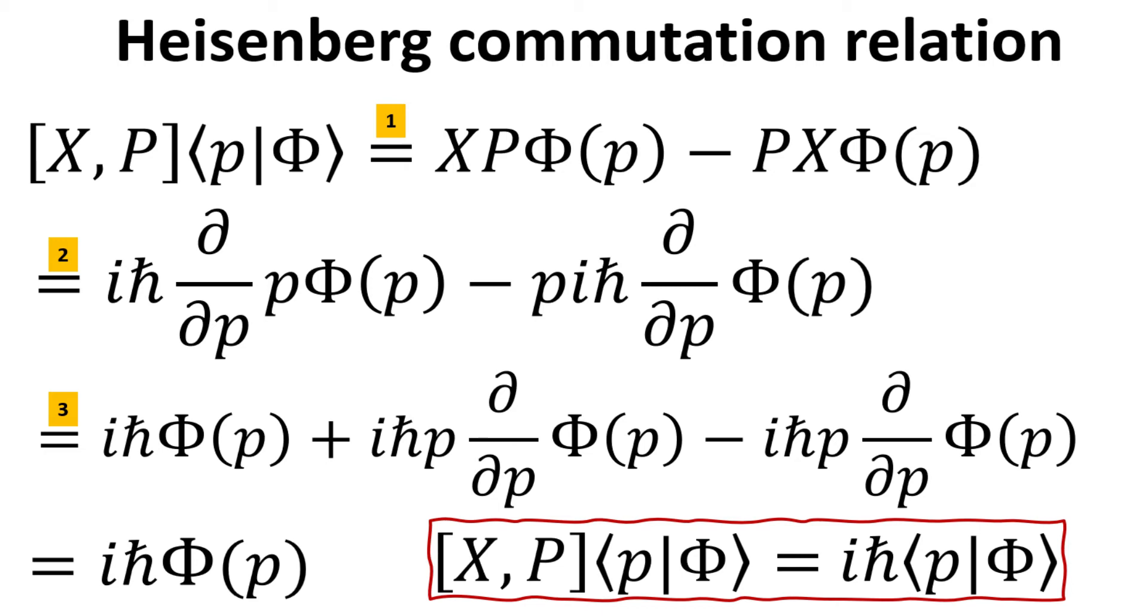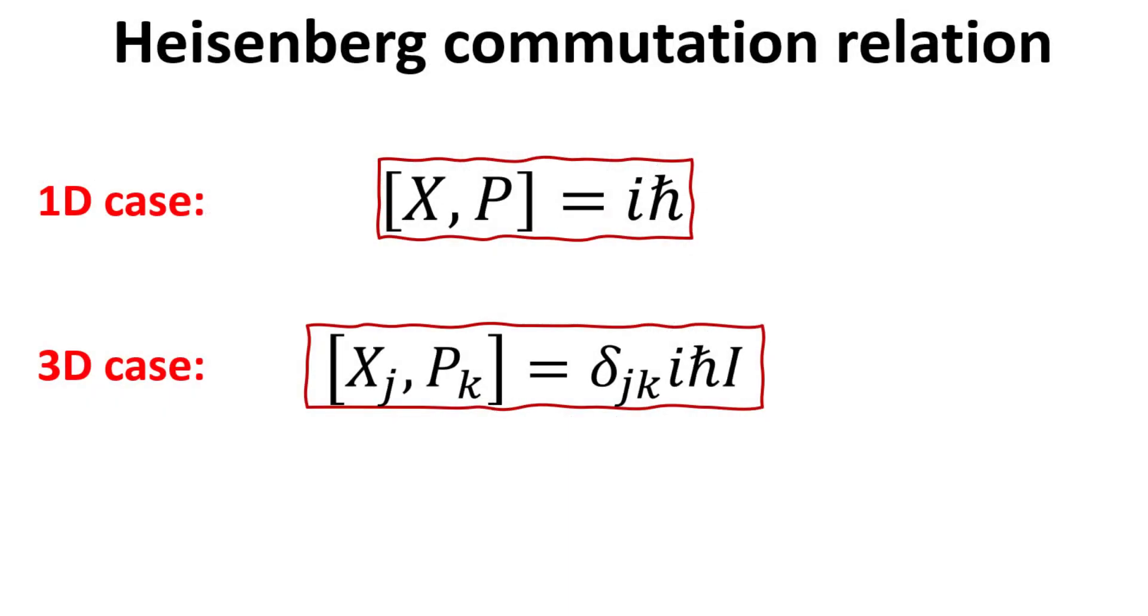Hence, this shows that the commutator of x with p equals iℏ, regardless of the wave function it acts on. So, we have shown the commutator relation in the one-dimensional case.